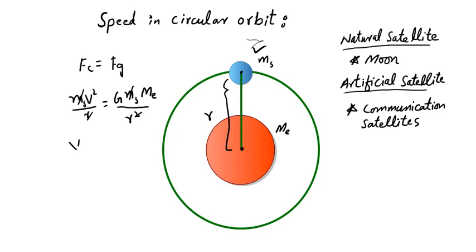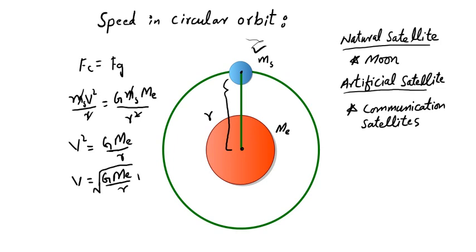The result is v² = G·Me / R. Taking the square root of both sides, we get v = √(G·Me / R). This equation tells us the speed of the satellite.